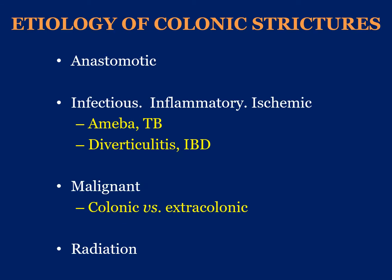Causes of colonic and rectal stricture include prior surgical resection, atypical infections such as amoeba and tuberculosis, inflammatory bowel disease, diverticulitis, and ischemia. Malignancy — whether primary adenocarcinoma of the colon or extra-colonic malignancies such as breast, esophagus, stomach, hepatobiliary, gynecologic, or urologic — can cause carcinomatosis with extrinsic compression on the colorectum. Patients with prior history of radiation to the abdomen or pelvis can also present with strictures.